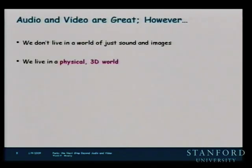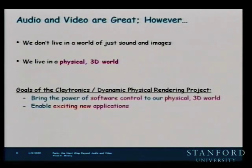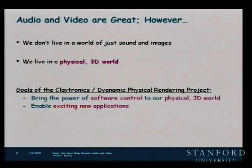As wonderful as multimedia is, it's important to remember that we don't just live in a world of sounds and moving images. The world we live in is this physical 3D world with real physical objects. The goal of our project is to have the same type of control we now have over arbitrary sounds and moving images — but over physical objects. We want to be able to create real physical objects that are under complete software control, so they can turn into any shape, move, and look like anything. This is going to enable very interesting new applications and change the way we interact with computation, making it much more natural.